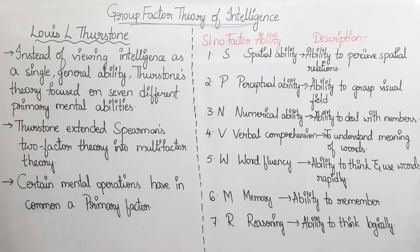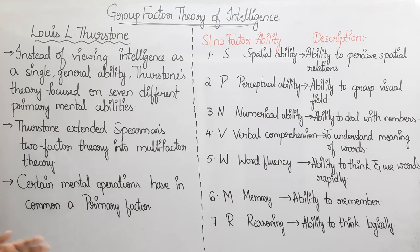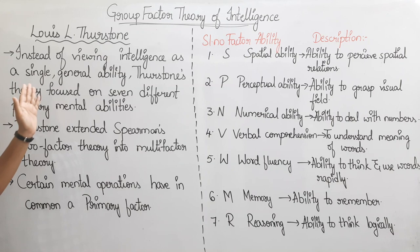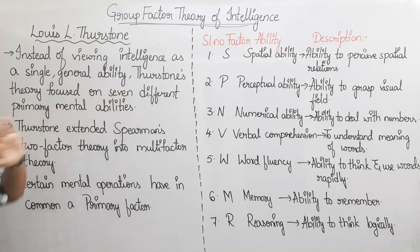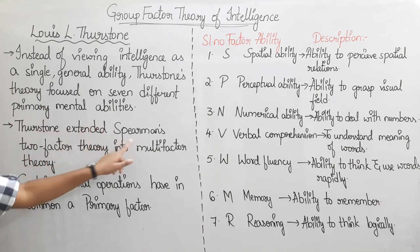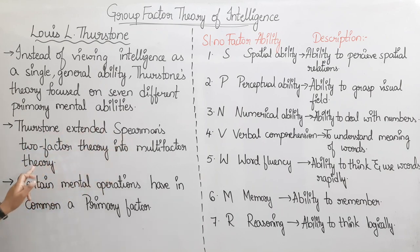If we have a general factor — Charles Spearman's two-factor theory holds that intelligence is a single general ability. But Thurston means intelligence is 7 different primary mental abilities. Thurston extended Spearman's two-factor theory into a multi-factor theory.